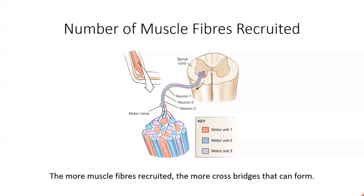The fewer muscle fibres innervated, the fewer muscle fibres where calcium is released into the sarcoplasm, the less calcium which binds to troponin, moving tropomyosin out of the way, and therefore allowing myosin and actin to bind. The more muscle fibres recruited — either recruiting larger or more motor units — the more cross bridges that can be formed, and the greater the force that can be produced by the muscle.